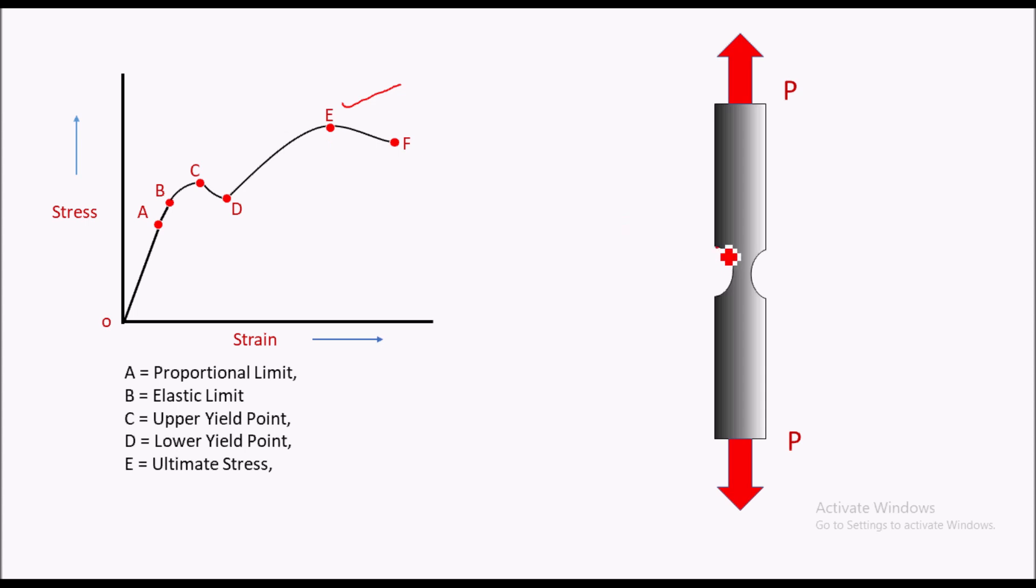At point E there is neck formation in this specimen; the cross-sectional area is going on decreasing. The value of stress at point E is called the ultimate strength, that is SUT. Ultimate strength is the maximum stress before formation of neck in a specimen.